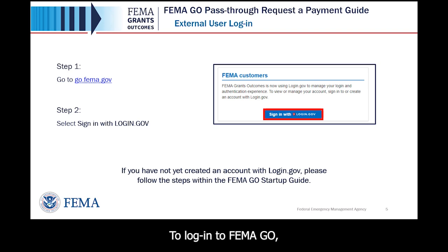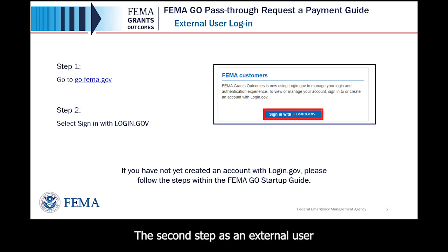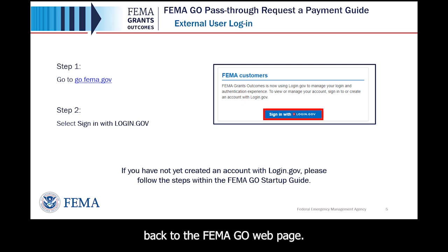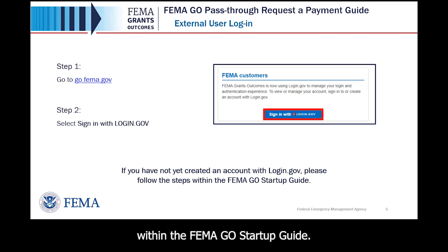To log into FEMA GO, the first step is to go to the FEMA GO website, go.fema.gov. The second step, as an external user, is to select Sign in with Login.gov. Once you are logged in at Login.gov, you will be redirected back to the FEMA GO webpage. If you have not yet created an account with Login.gov, please follow the steps within the FEMA GO startup guide.